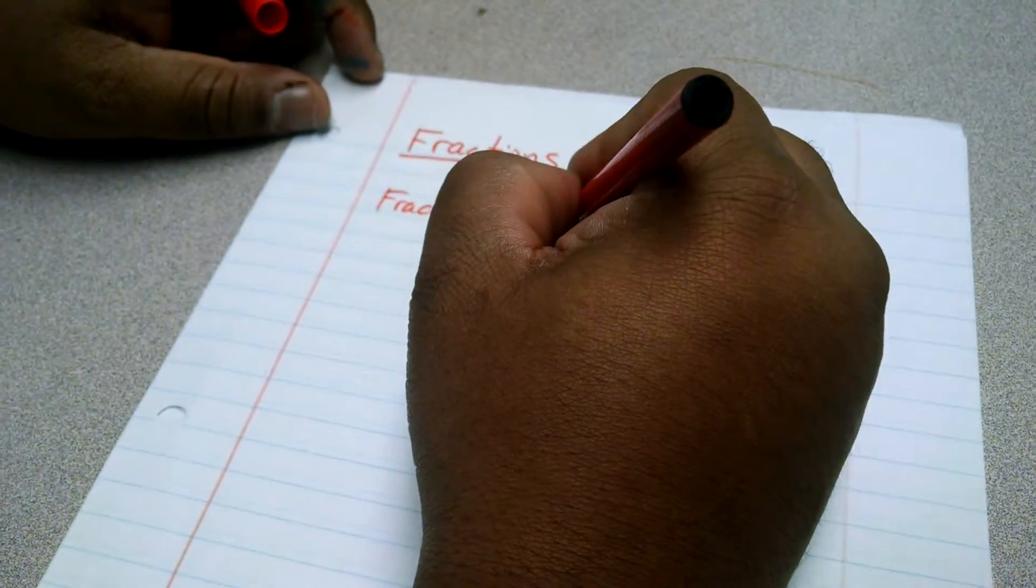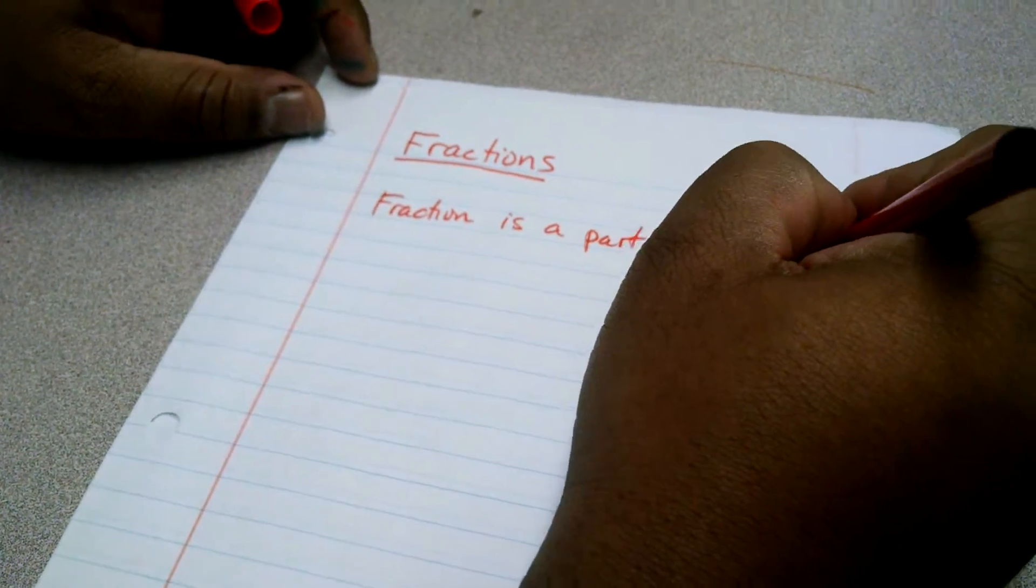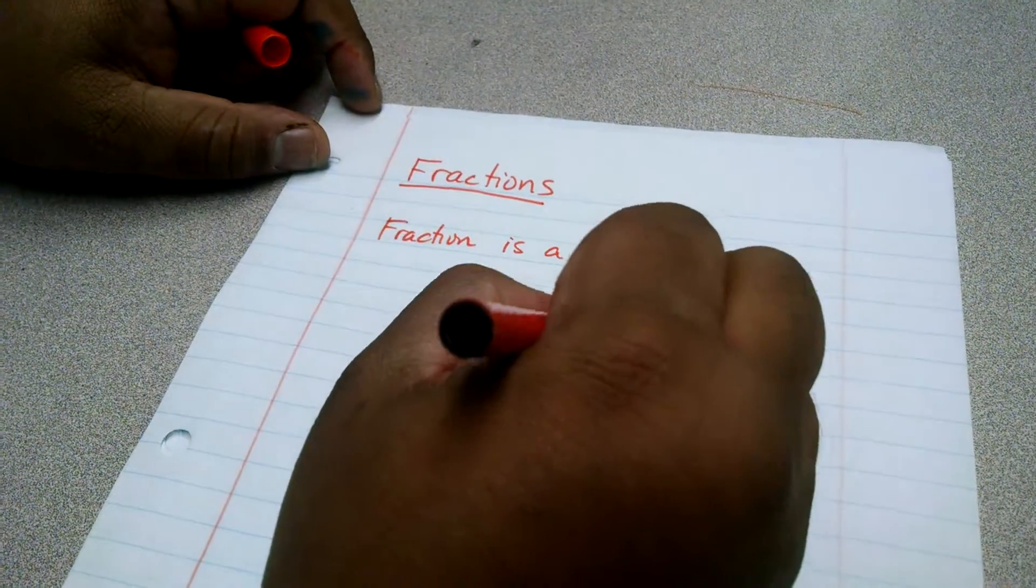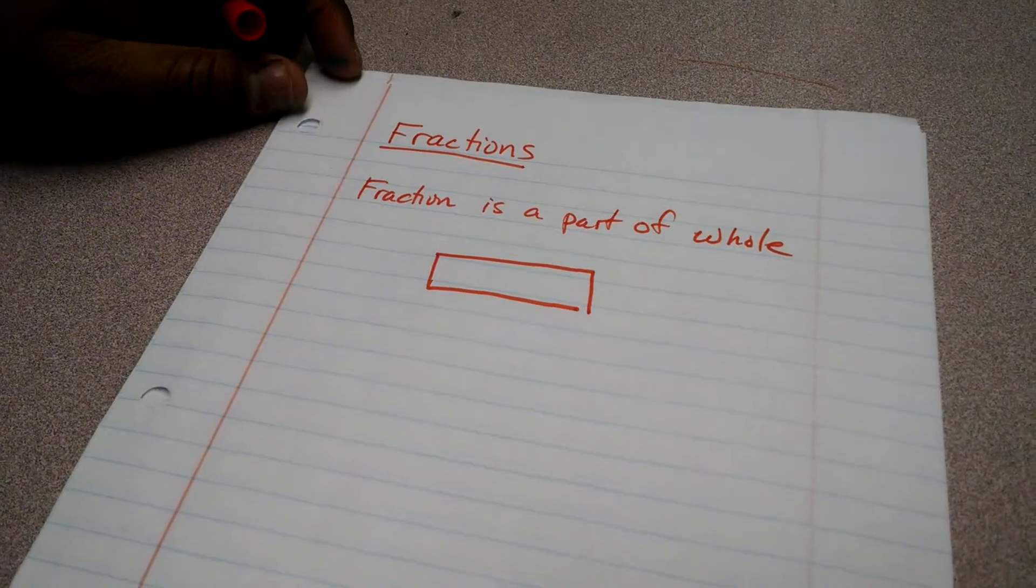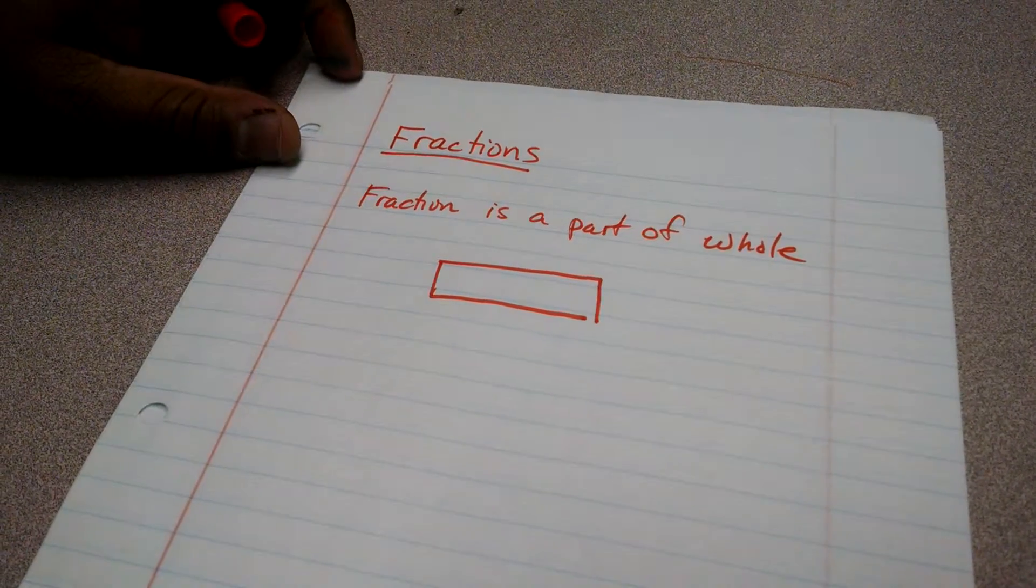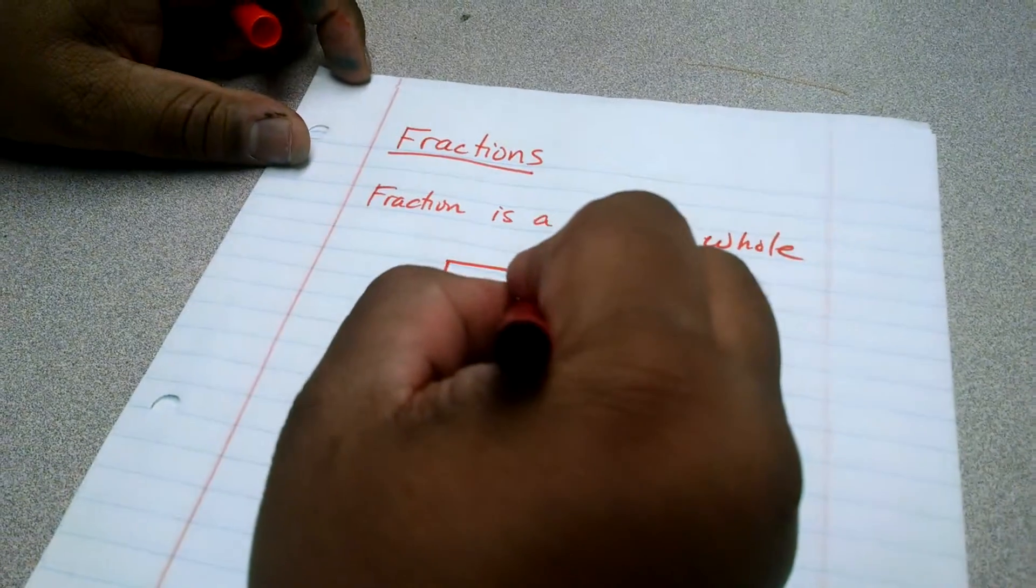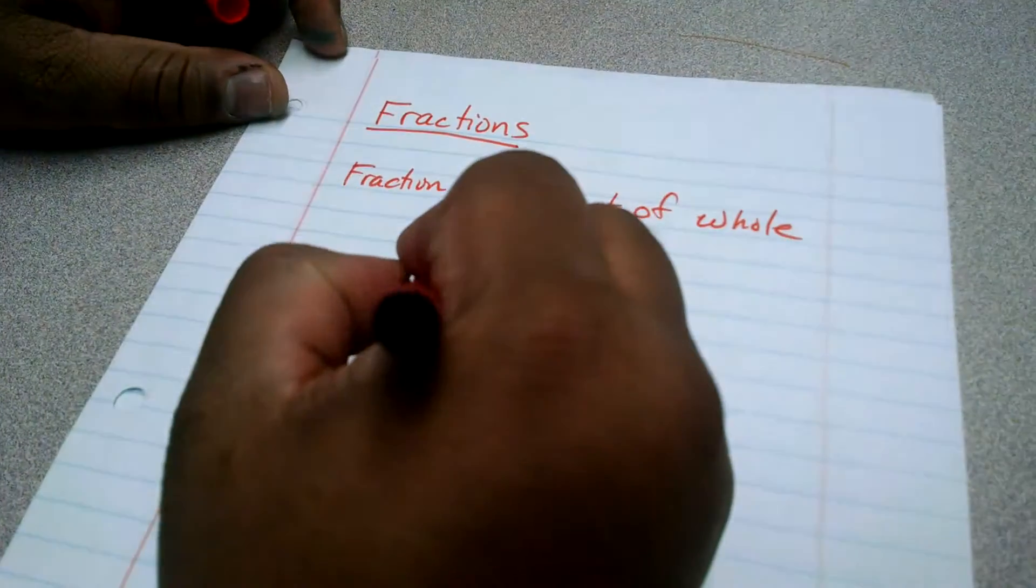An example would be: you have a brownie that you're going to share, one brownie, and there are two people. How much would each person get? Well, person one would get this,